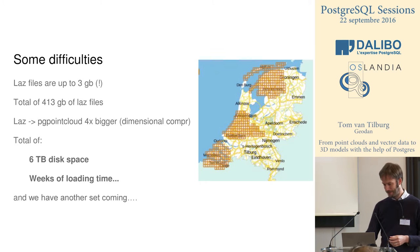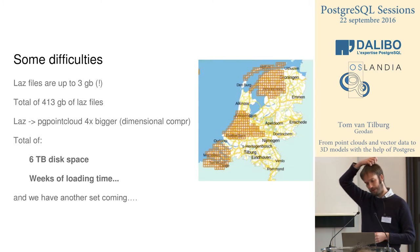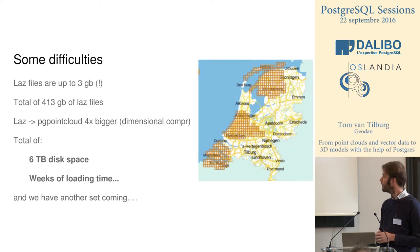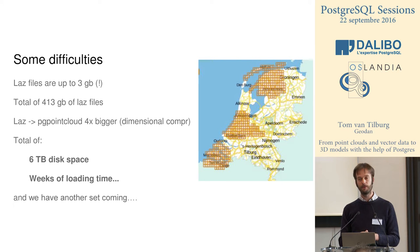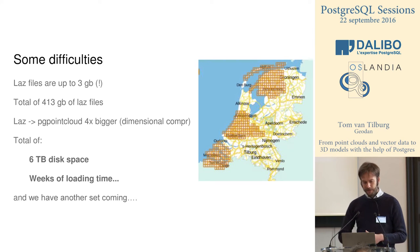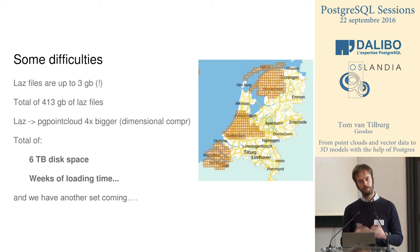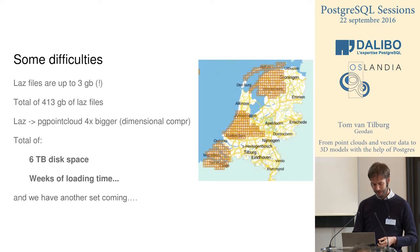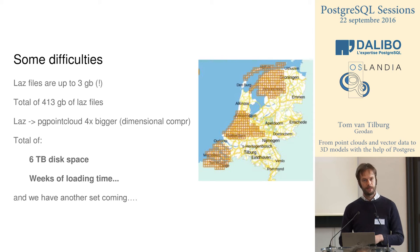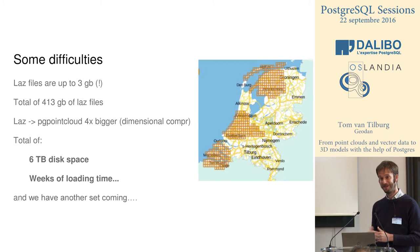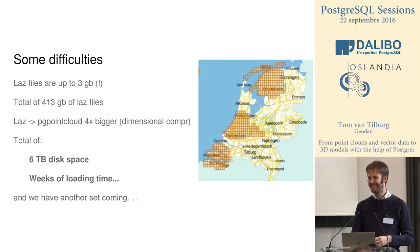The current coverage — every orange triangle you see is one file, and these are rather large areas, up to three gigabytes of point cloud in LAS format. We have a total of about 413 gigabytes of those files. If you put them into your database, they grow roughly four times bigger, so that uses a total of six terabytes of disk space. That was a lot when we started a year ago, but terabytes is rapidly becoming the norm.